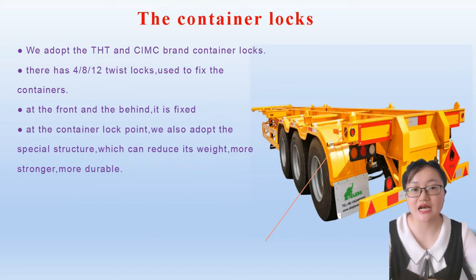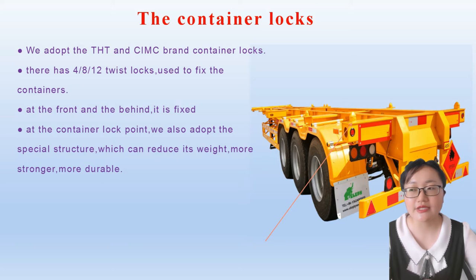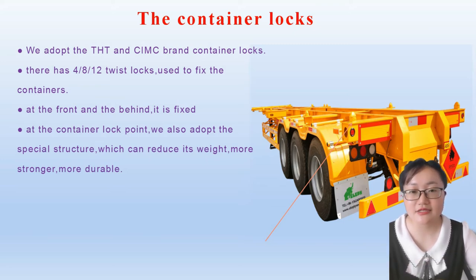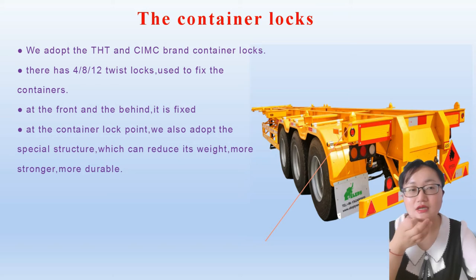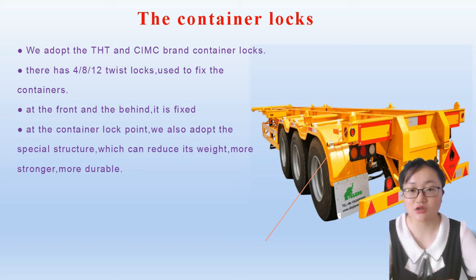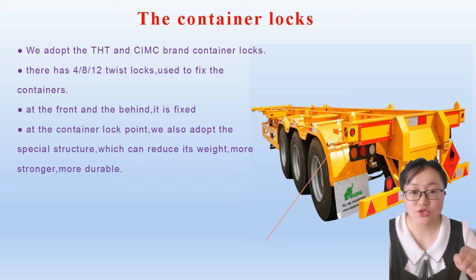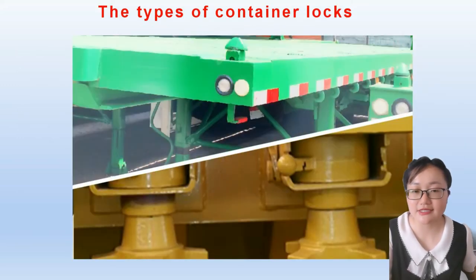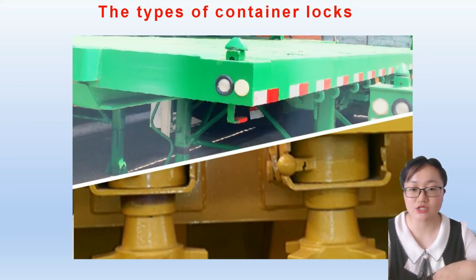This is our container locks. We have adopted THT and CMC brand container locks. Usually there are four, eight, or twelve locks to fix the containers. The front and rear container locks are fixed, but the middle part locks can be flipped up when needed, or put down when not in use. At the container connection points, we also use a special design so that it is stronger and more reliable. These are the different types of our container locks, so you can choose when you buy.